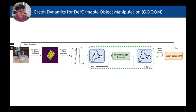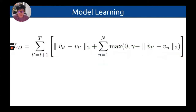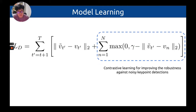We introduce JUDOOM: graph dynamics for deformable object manipulation. JUDOOM performs unsupervised keypoint detection directly from a top-down depth image, extracts keypoint features, groups them into graphs according to spatial relationships, and reasons with a learned latent graph dynamic model for decision making. We use graph neural networks to capture interactions among keypoints. A graph-based model-predictive control is introduced to improve quality and sample efficiency of planning. Contrastive learning is further used to improve model quality by contrasting predicted states with negative samples drawn from the dataset.